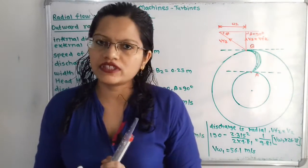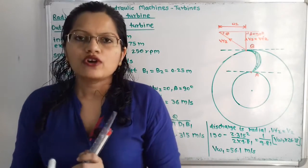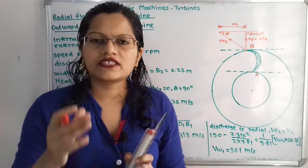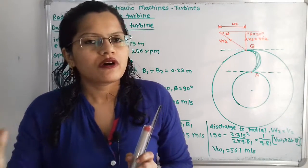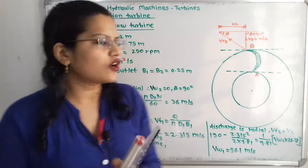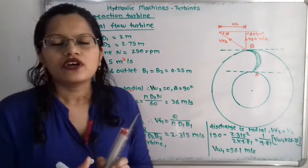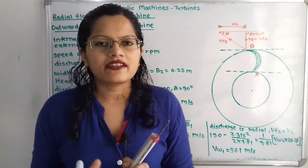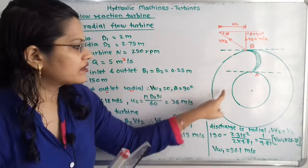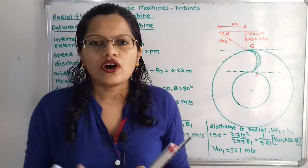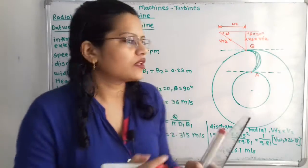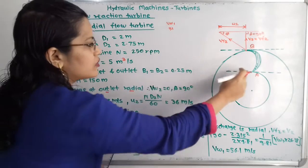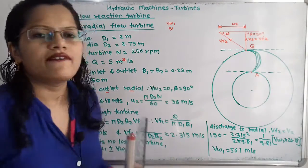Now, how to draw the velocity diagram at the inlet tip? For that we first need to decide what the angle theta is — whether it is acute, obtuse, or 90 degrees. Since it is not given in the data, we must first find out the angle theta, and only then can we draw the velocity diagram. Alternatively, we can find the values of Vw1 and U1, and from those values draw the velocity diagram.